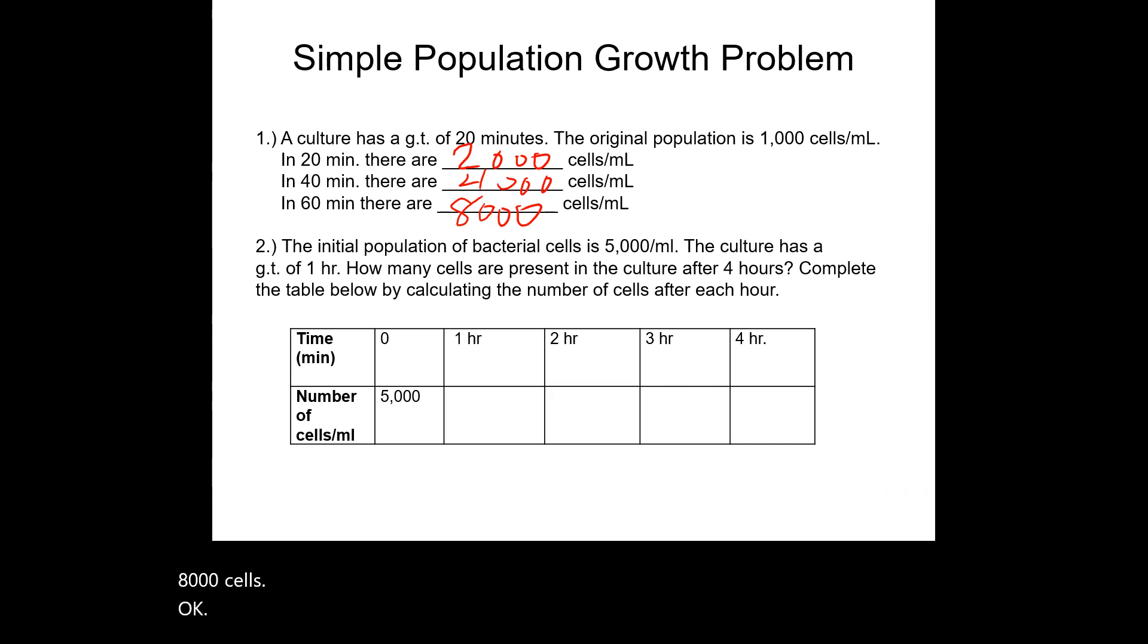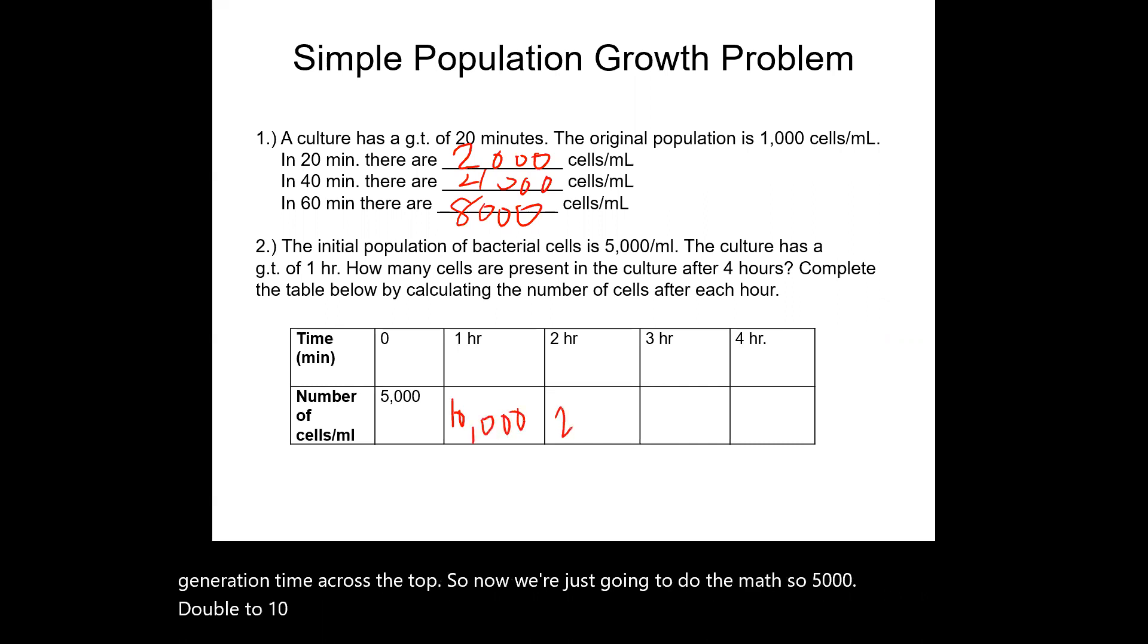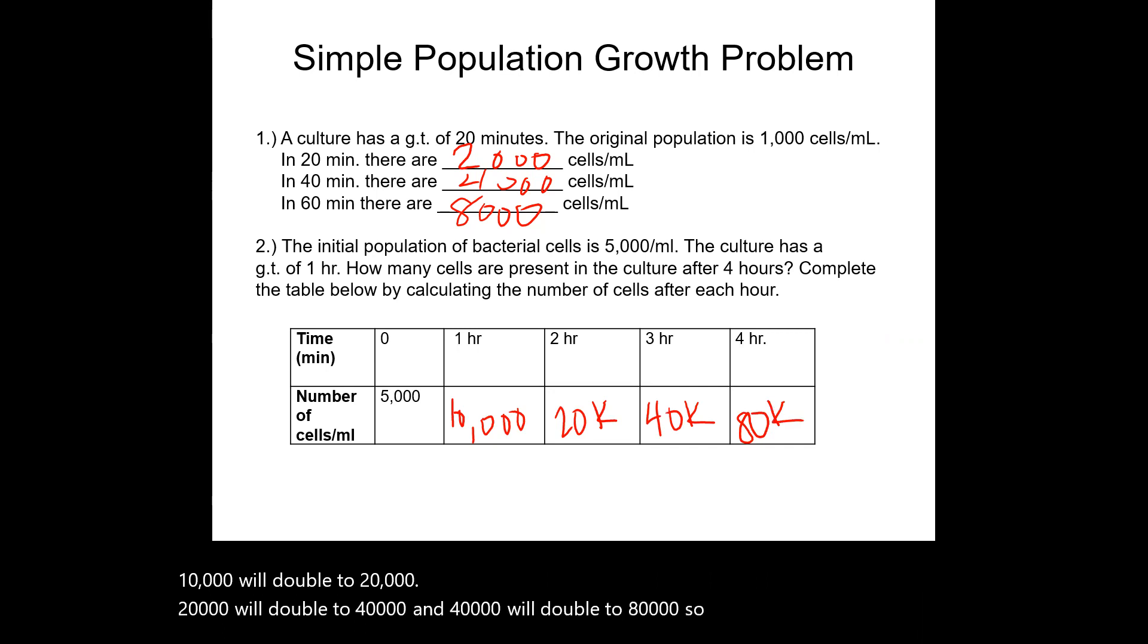So another practice problem, kind of showing you how to table it out if that's what you need. So the initial population is 5,000 per milliliters of culture, another generation time of one hour. So how many cells will there be after four hours? So notice we've got our T0 here saying that we're starting with 5,000 cultures, it's going to double every hour. So we put every generation time across the top, so now we're just going to do the math. So 5,000 will double to 10,000, 10,000 will double to 20,000, 20,000 will double to 40,000, and 40,000 will double to 80,000. So that's how many cells we would have, and it's technically 80,000 per milliliter.